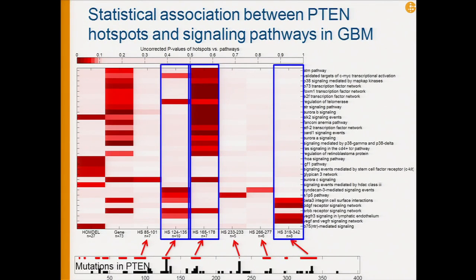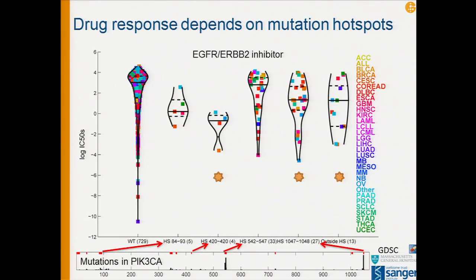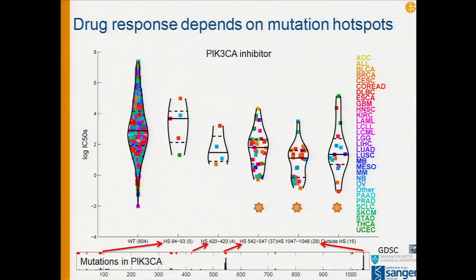In the case of PTEN, these hotspots can be directly related to protein structure — for example, the hotspot around amino acid 330 is in the C-alpha-2 domain, and the one around amino acid 170 is in the TI loop. One can begin to think about the interplay between structural changes to the protein and what this means at the pathway level, and perhaps even at the cellular or phenotypic level. This brings us back to drug response: looking at mutations in PI3 kinase, depending on the drug, different hotspots sensitize to different drugs.